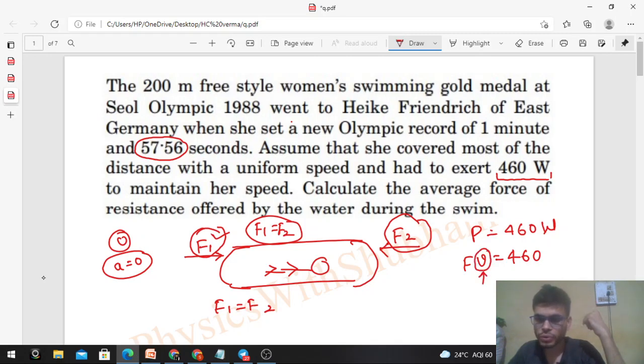in order to find out the force of resistance, because force of resistance is same as the force applied by the swimmer in the backward direction. We have the power, 460 watts. To find force, we can find the speed because distance is given and time is also given.